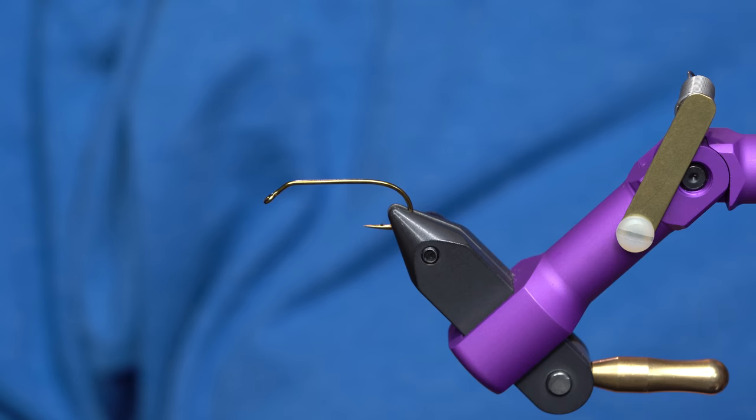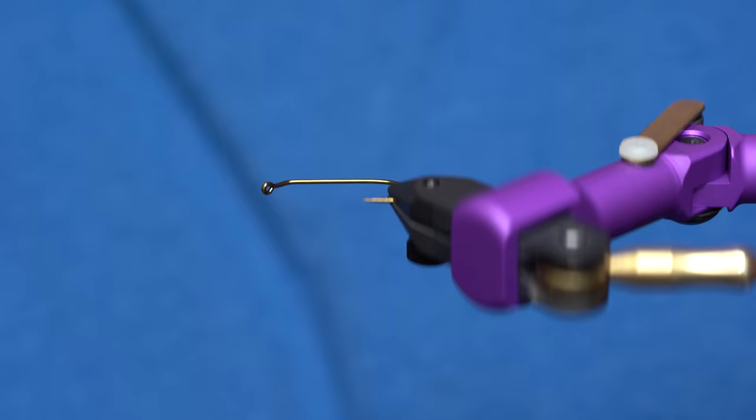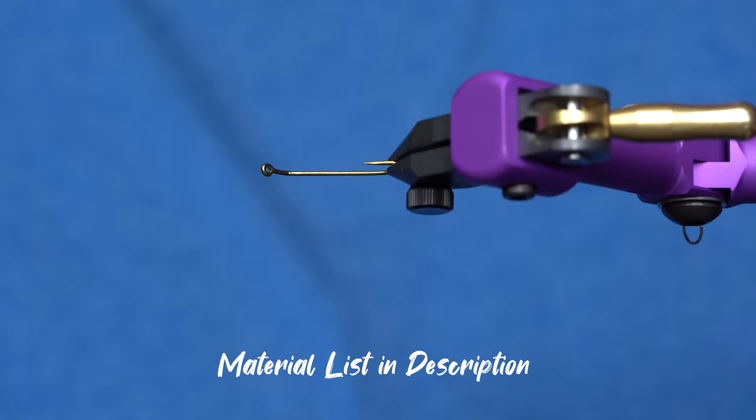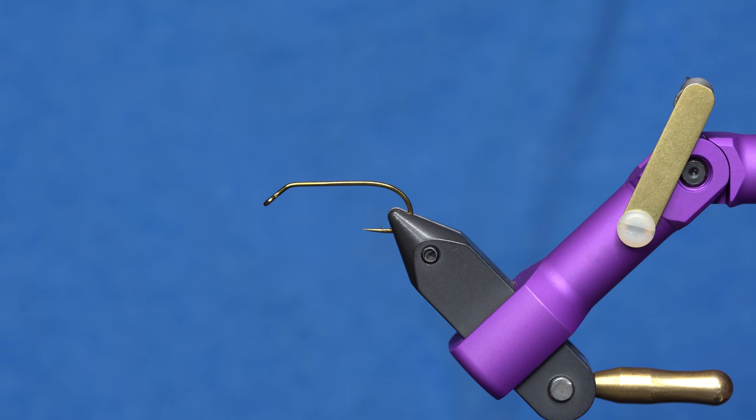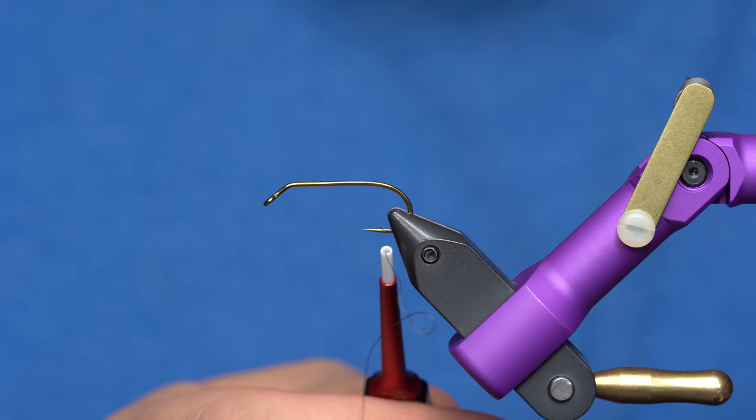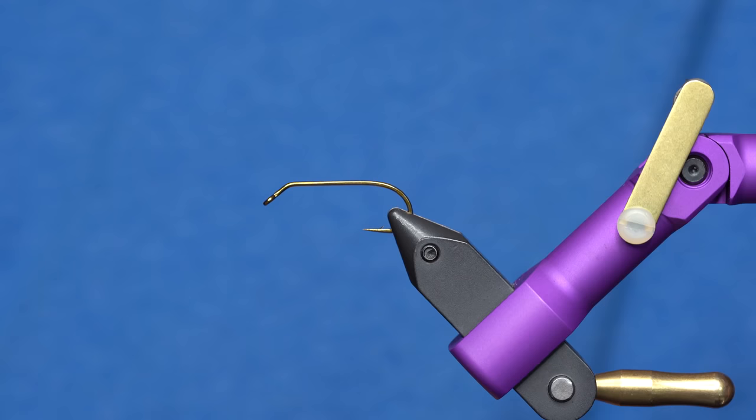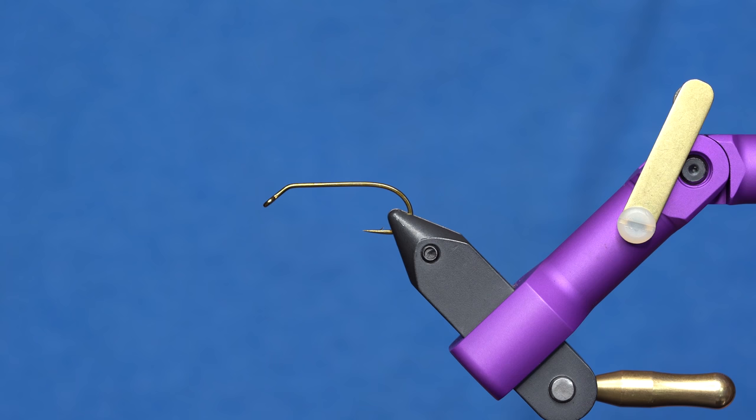First things first, you'll notice is we're using the Tiemco 708 hook. This is a 40 degree jig hook. It's going to really help this fly ride hook point up. And I really like the long hook point on this one. I fished this one quite a bit all of last year and caught a ton of fish on this hook. So that's one modification that I've made. Everything else is pretty by the book.